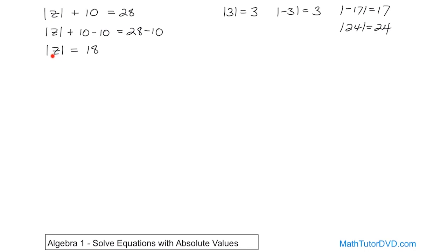When you have an absolute value, there are really two values that will work for z. z can be 18, but z can also be negative 18. This is the answer you would circle on your paper. Because absolute value of 18 is 18, and absolute value of negative 18 is also positive 18. So there are two values that work. When your variable is wrapped up in an absolute value, you're always going to get two answers — one positive and one negative — because the absolute value strips away the sign.